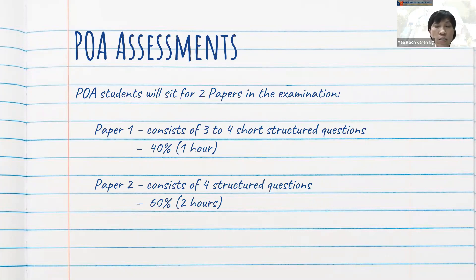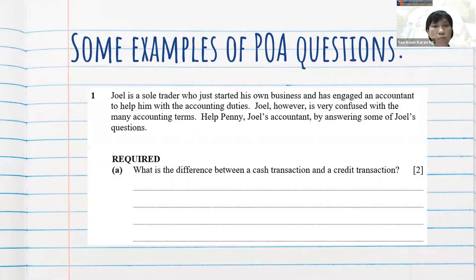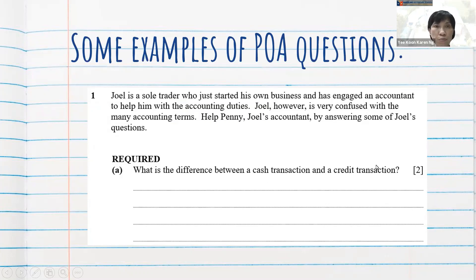Let us now look at some examples of POA papers. In this question, a scenario is given to the students, and students are required to explain a particular theory. This is an example of a POA Paper 1 question.